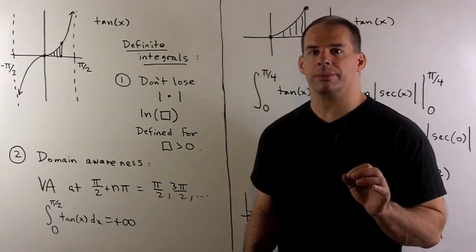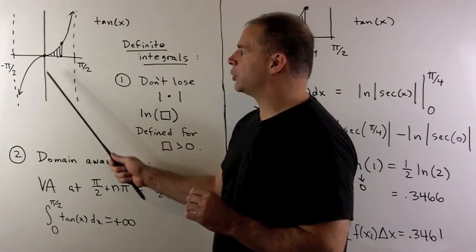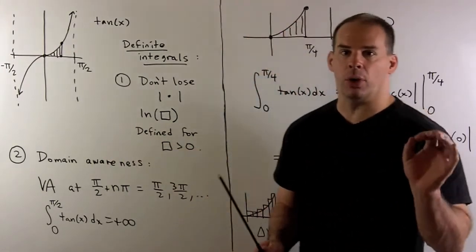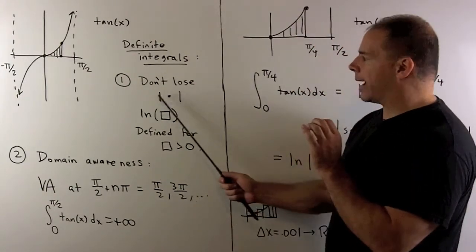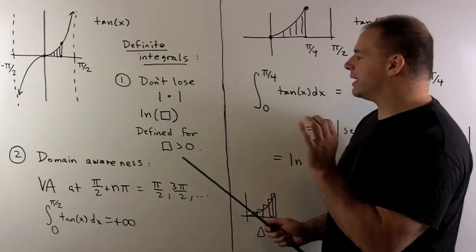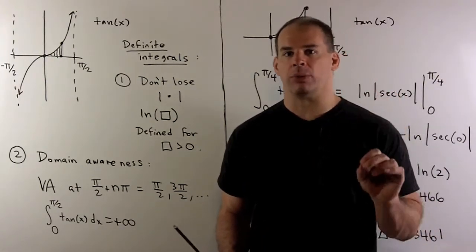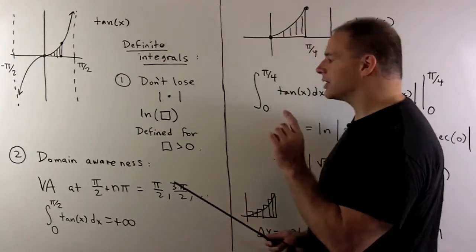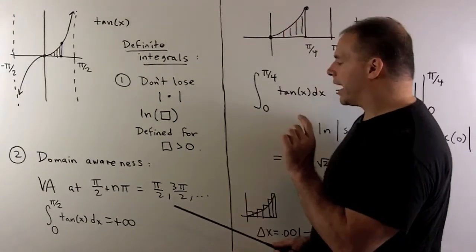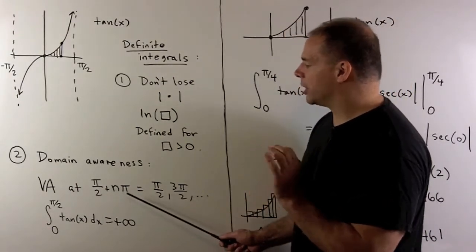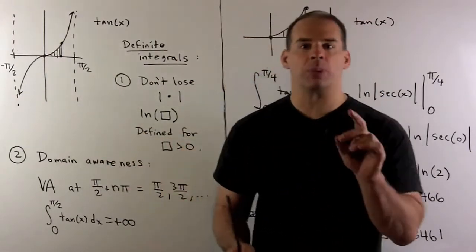Let's talk about definite integrals. Here, we're interested in taking the net area between the graph of tan x and the x-axis between two points. Some things to note: when you're using the first fundamental theorem of calculus, don't drop your absolute value signs. Natural log is only going to be defined for positive numbers, and secant takes on negative values, so we have to be careful with that. Next, be aware of your domain. When you pick your limits of integration, we don't want to catch points of the form pi/2 plus an integer multiple of pi. At those points, we're going to have vertical asymptotes that will cause problems when we integrate.